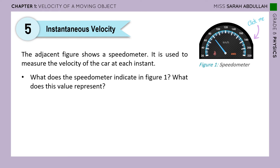We talked about average velocity being the distance divided by duration. Now we're going to talk about instantaneous velocity. From the name, remember the definition of an instant — it's an exact time. So instantaneous velocity is not average; it's not over a certain distance. It's the velocity at a specific moment or specific time. The speedometer we see inside a car is a famous example of instantaneous velocity — it tells us the speed of the car at each instant.